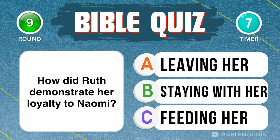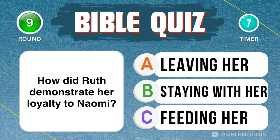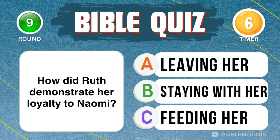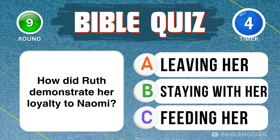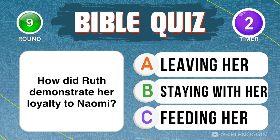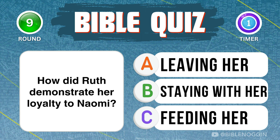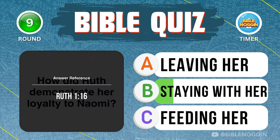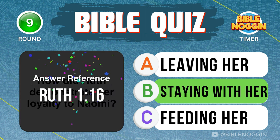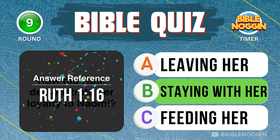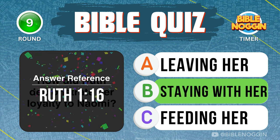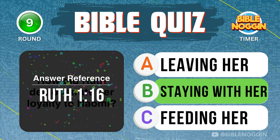Question 9: How did Ruth demonstrate her loyalty to Naomi? She demonstrated it by staying with her — found in Ruth chapter 1, verse 16.